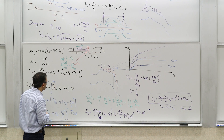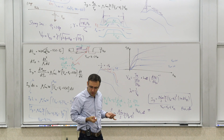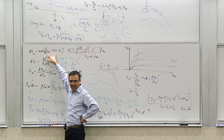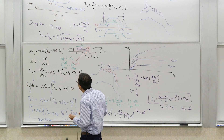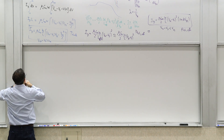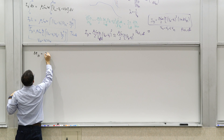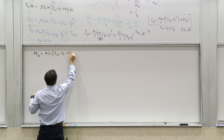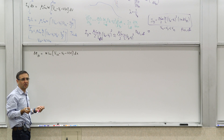So we want to understand how much charge is in the channel. We know that the infinitesimal charge dq is given by: dq = W·Cox·(Vgs − Vt − V(x))·dx. We are making the same assumption as before that Vt does not change across the channel — this is a simplifying assumption to make our analysis easier.